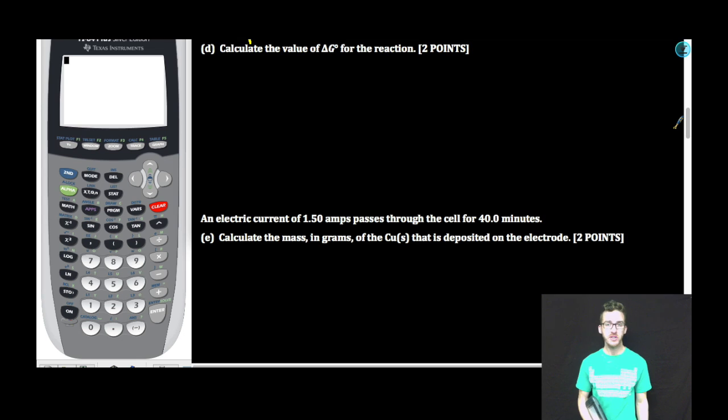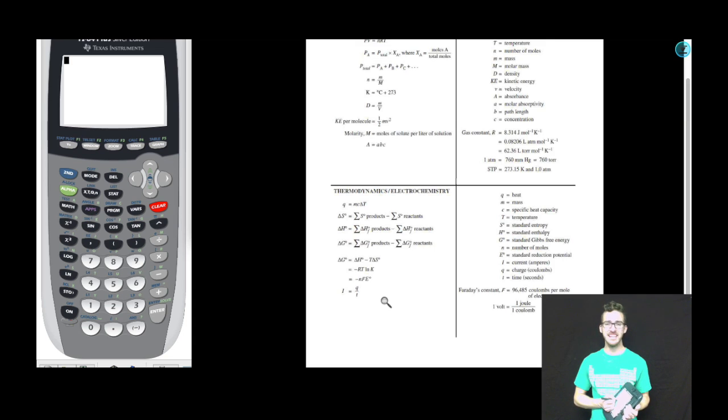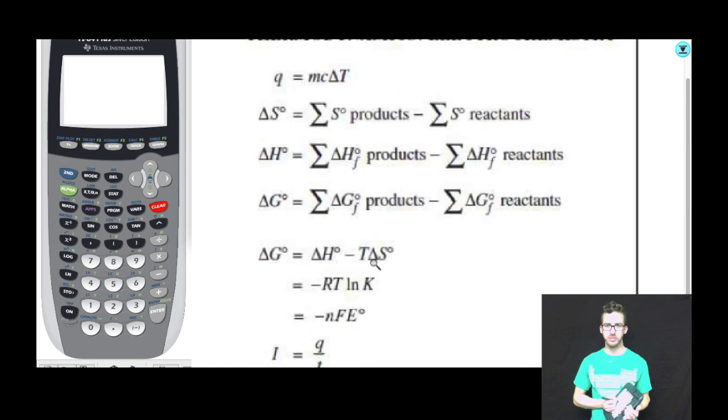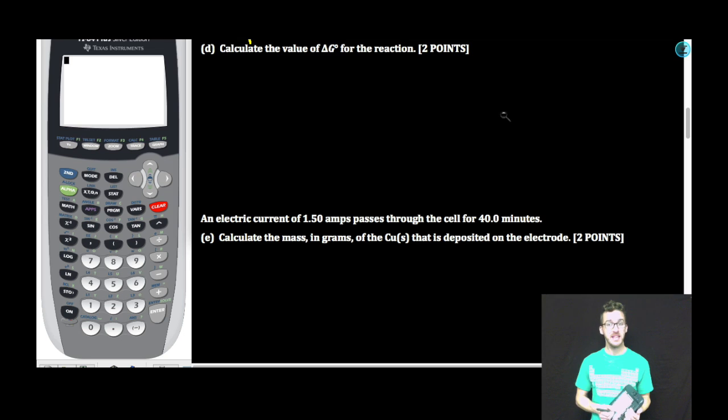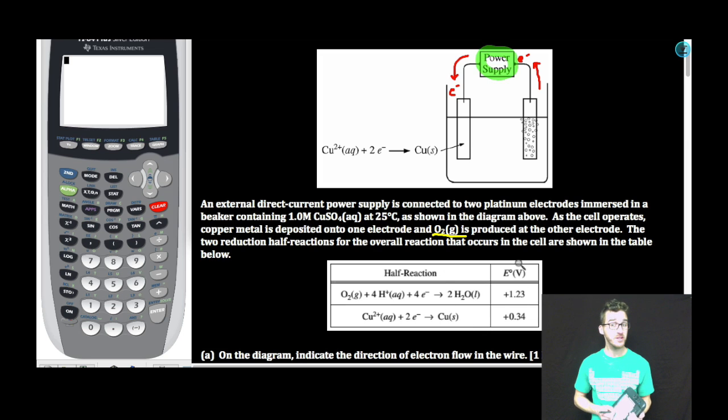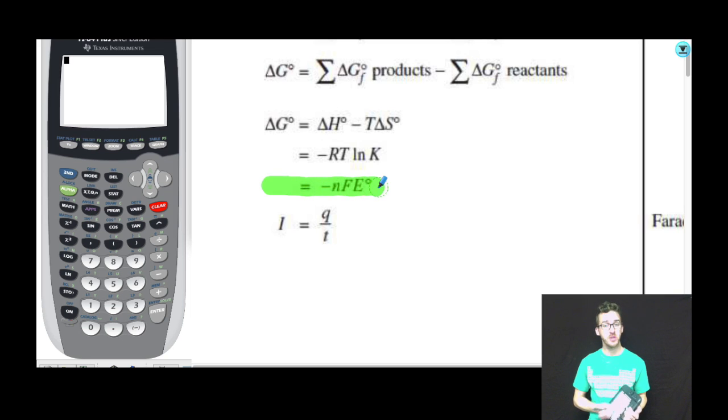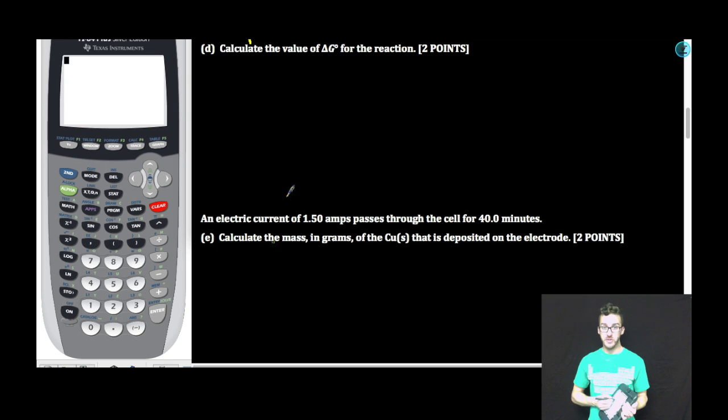Part D, calculate the value of ΔG for the reaction. Well, we just decided in part C that it has to be positive. But how can I come up with the actual value? If I look at my handy dandy formula chart, there are several different ways that I can calculate ΔG. As I think about what I'm provided in this problem, the most likely way I could get there is by determining the cell potential for this reaction. So first, let's determine the cell potential for this electrolytic cell.